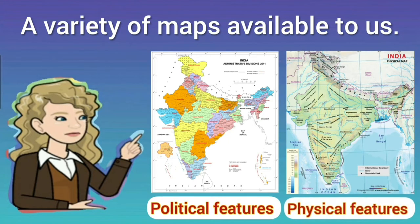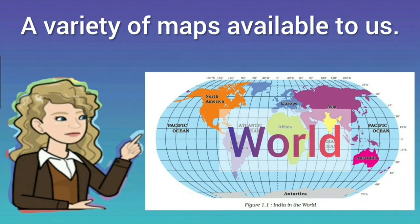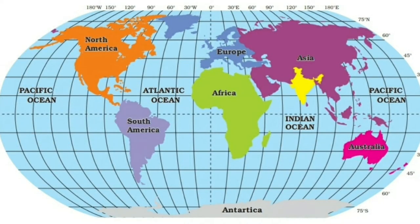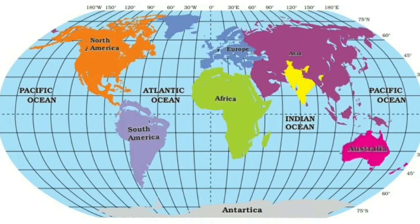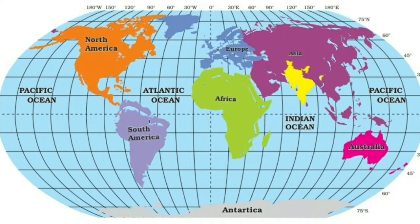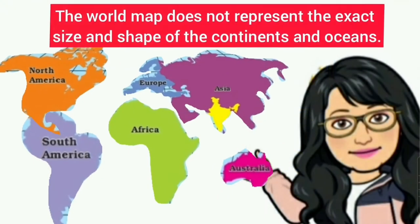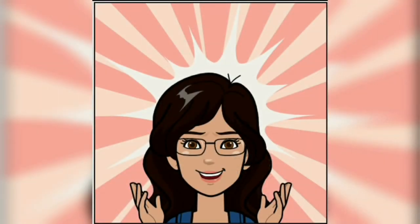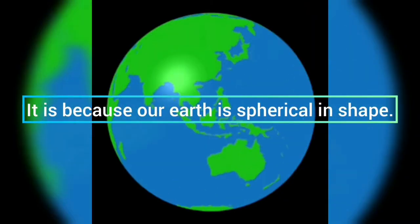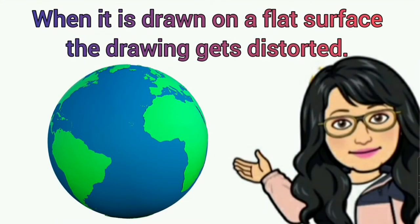There are a variety of maps available to us showing different political and physical features of states, countries, and the world. You must have seen a world map — it gives us information about all the continents and oceans, but not in their accurate shapes and sizes. This is true: the world map does not represent the exact size and shape of the continents and oceans. It is because our earth is spherical in shape, and when it is drawn on a flat surface, the drawing gets distorted.